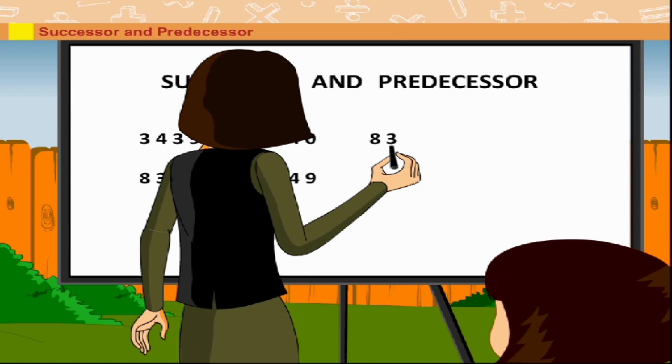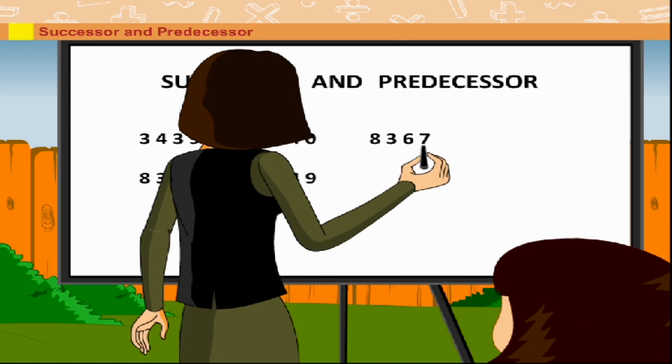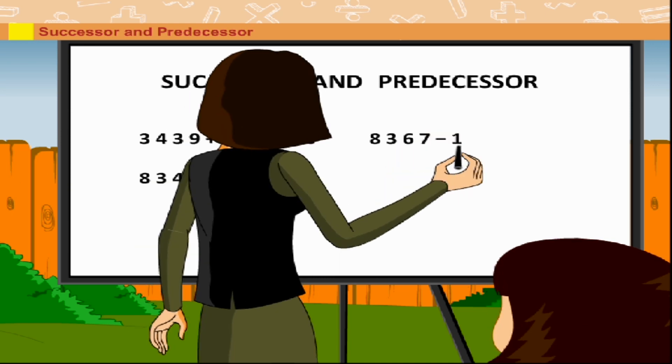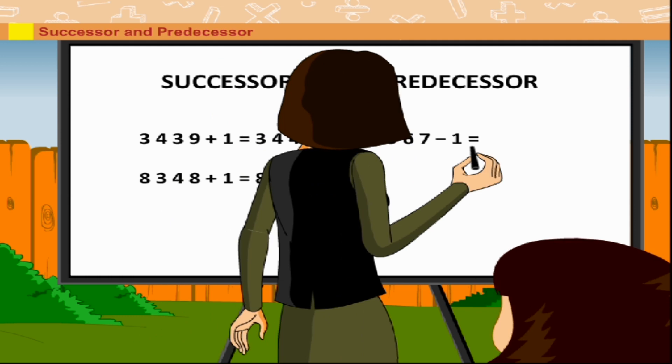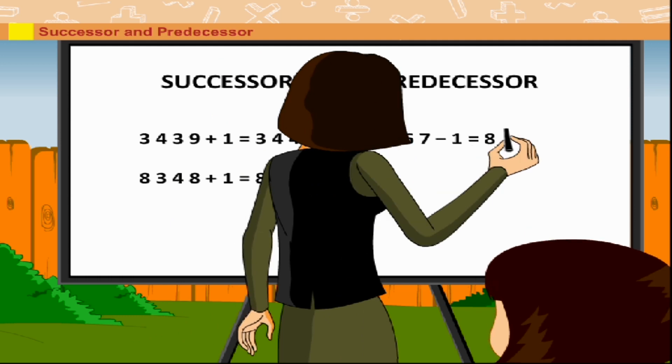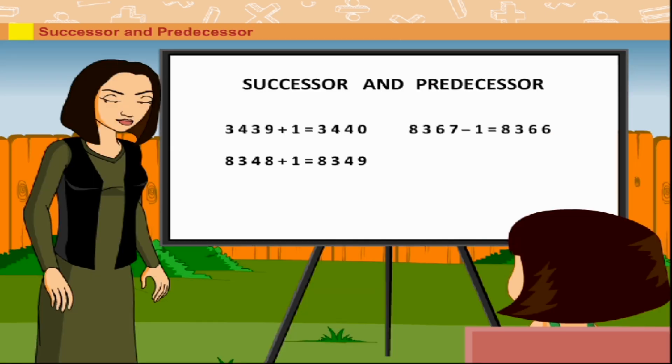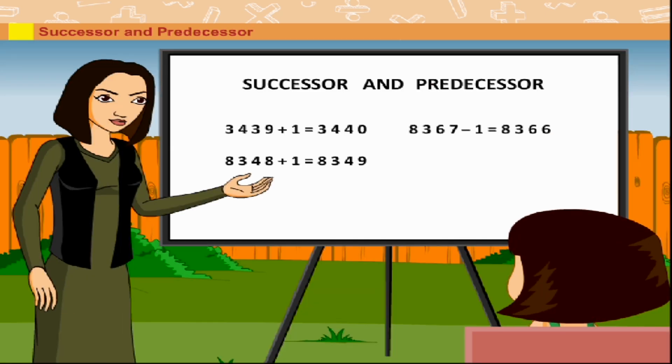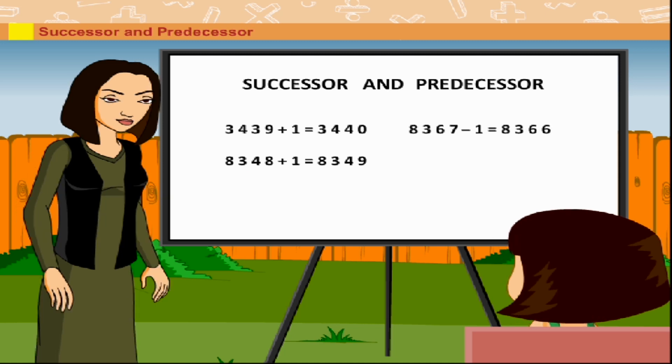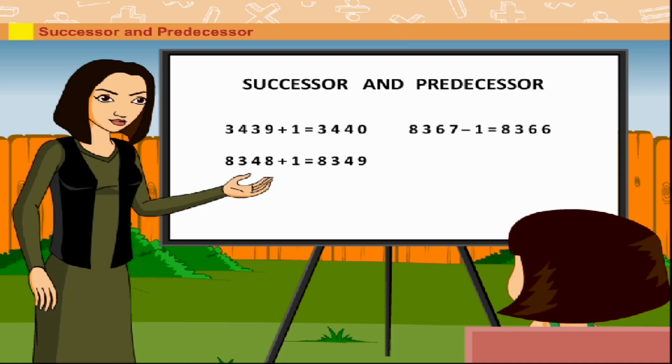8367 minus 1 is equal to 8366. Here, 8366 is the predecessor of 8367.